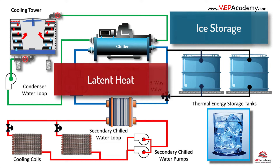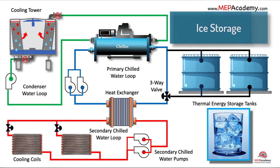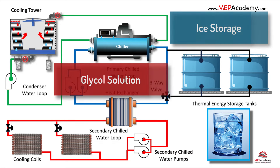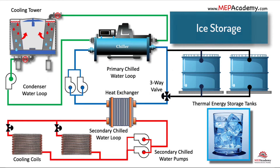There are several strategies for producing ice, one of which is to circulate a glycol solution through coils submerged within the tank. Ice then accumulates on the outside of the coil within the tank.